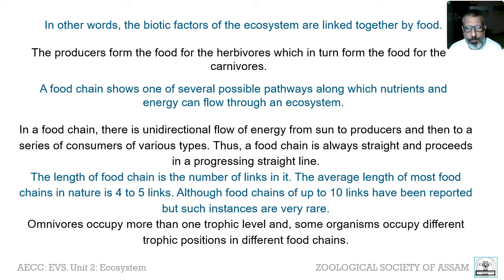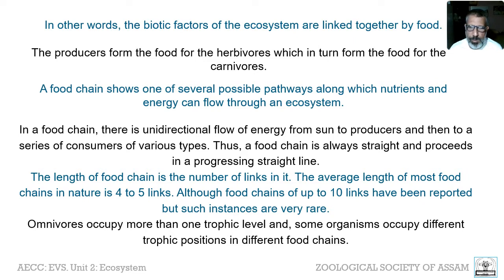Omnivores occupy more than one trophic level. For example, human beings feed upon both plants and animals, so we are omnivores and fall at more than one trophic level in a food chain. Some organisms occupy different trophic positions in different food chains. Also, during different stages of their life history, organisms may occupy different trophic positions — for example, the tadpole will form part of a different food chain, while the adult frog forms part of a different one.